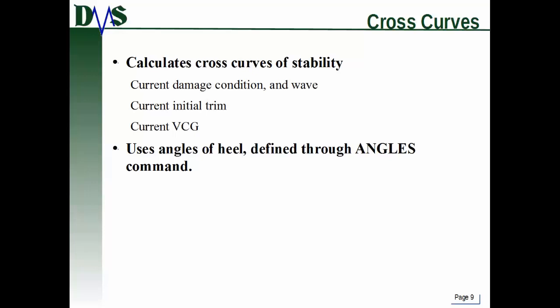Now let's talk about cross curves of stability. In the old days before stability programs like GHS, heeling the ship over to find how the heeling moment varied with angle required intense hand calculations. So they developed cross curves, which basically tell you how much of a moment arm you have for a given heel angle. Several regulatory bodies still require you to submit cross curves of stability with any stability documents — they're there for operator use and as a backup in case your program goes down.